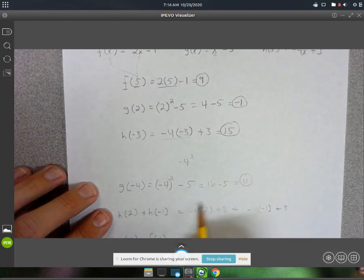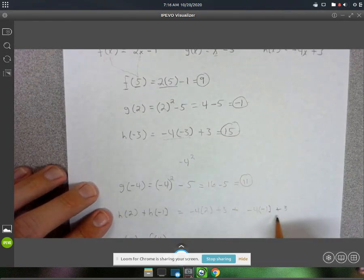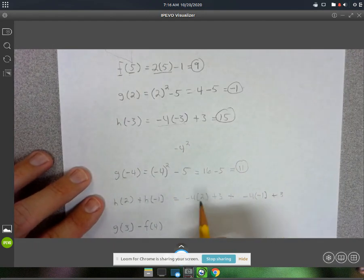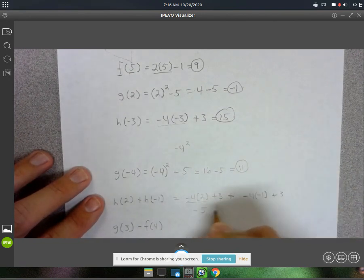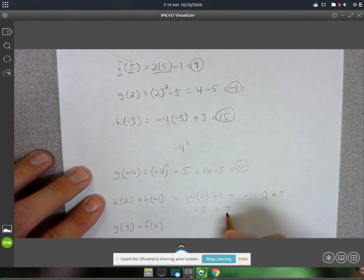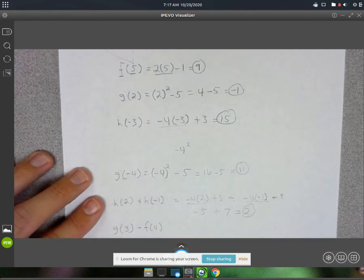Alright, so if you wanted to, you could just evaluate this and then evaluate that and then add them together. Let's see here, this is negative 8. Negative 8 plus 3 is going to be negative 5. This is going to be positive 4 because you've got two negatives. And plus 3 is 7. And then negative 5 plus 7 is 2.